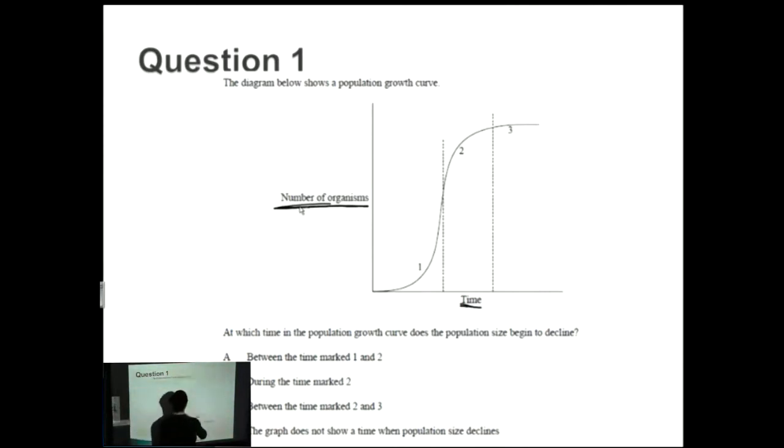If you have a look over here, for one we have an exponential increase, for two we have an exponential tapering off, and for three we have a flattening of the graph. But does the number ever actually decrease? No, it never actually decreases.